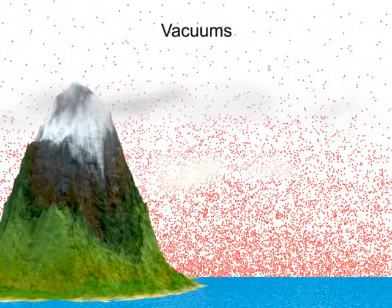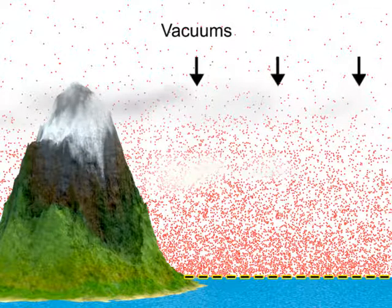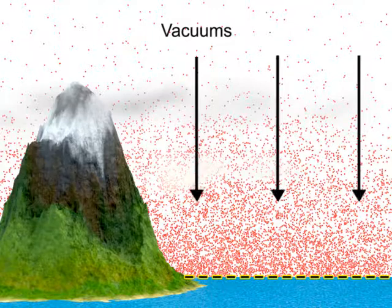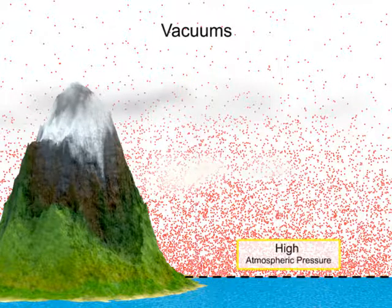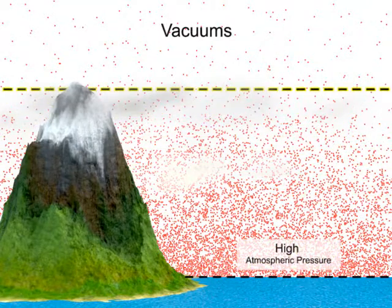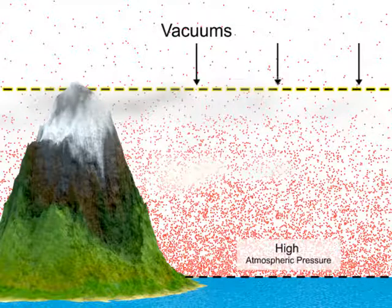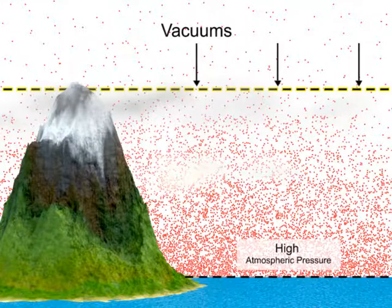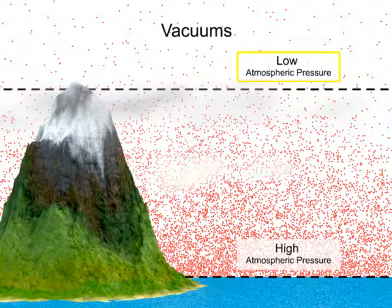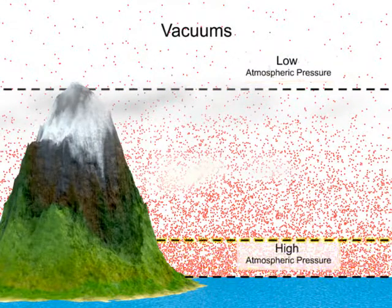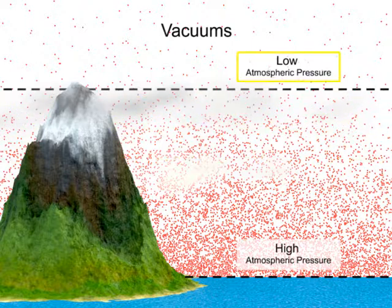At sea level, all of the weight of the atmosphere above is pressing on the Earth, therefore the atmospheric pressure is at its highest. As elevation increases, the total amount of atmosphere directly above the surface is much less than at sea level, therefore the atmospheric pressure is much lower. Atmospheric pressure decreases as elevation increases.